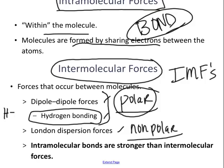H needs to be attached to what three elements? NOF. Those who had me last year, I say NOF. Some teachers say FON. NOF or FON — you have to have hydrogen literally bonded specifically to one of those three things — nitrogen, oxygen, or fluorine — in order for there to be hydrogen bonding.